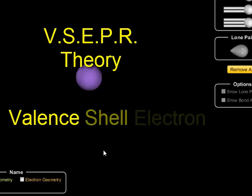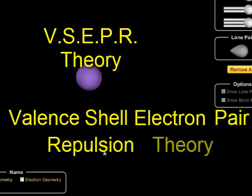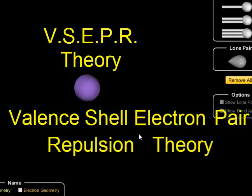VSEPR stands for the valence shell electron repulsion theory. The VSEPR theory says that all of the bonded atoms, the electron clouds around them, and any unshared electrons all want to get as far away from each other as they can.